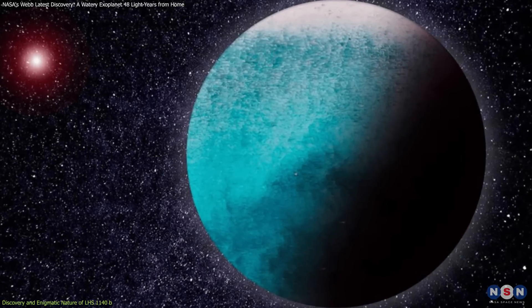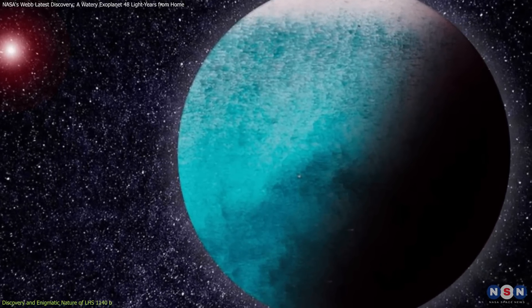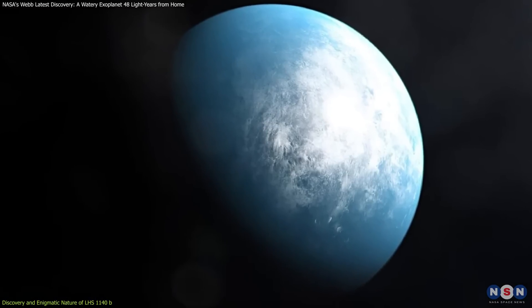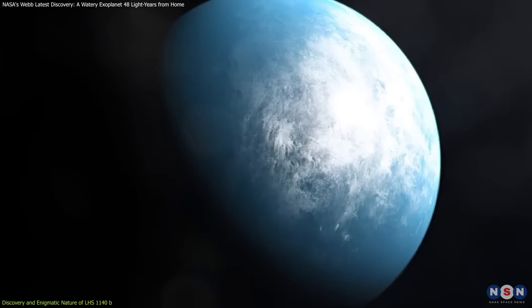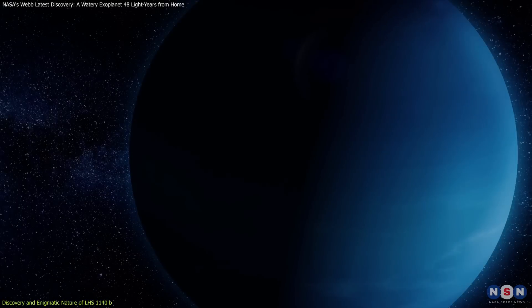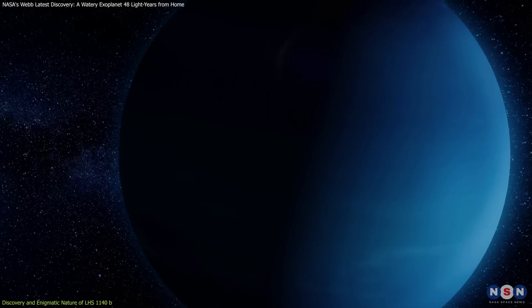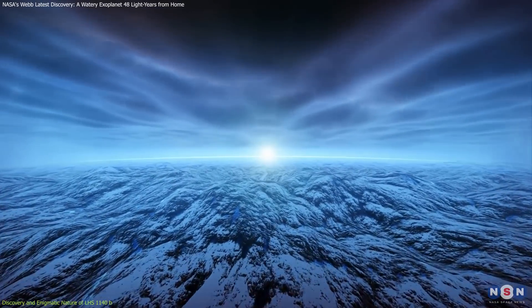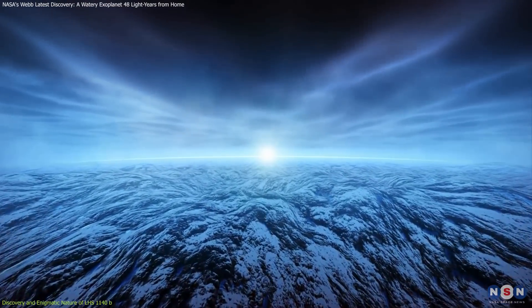Initial observations suggested it could be a mini-Neptune, a type of planet with qualities between those of Earth and the gas giants like Neptune. This category of planets, while intriguing, often indicates environments too hostile or volatile for life as we understand it.